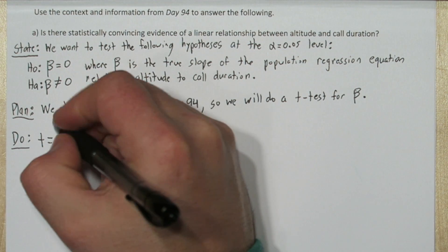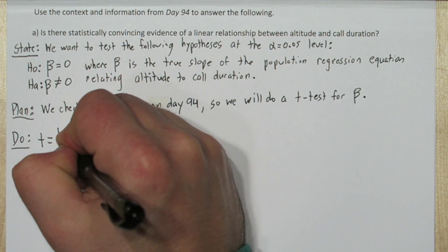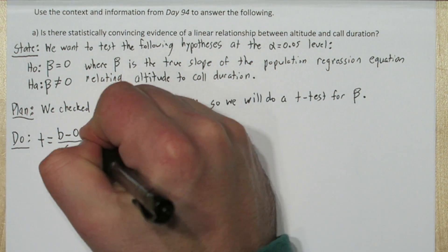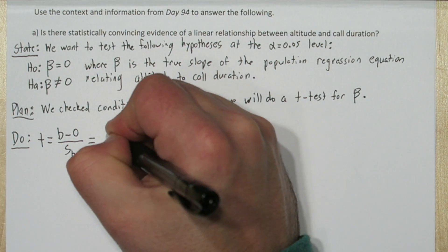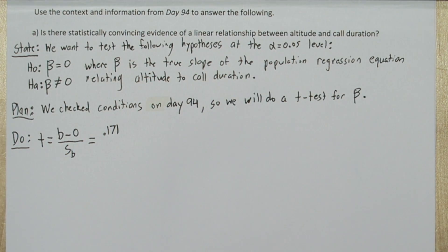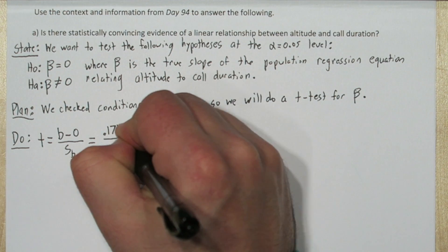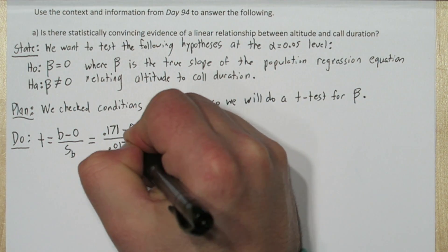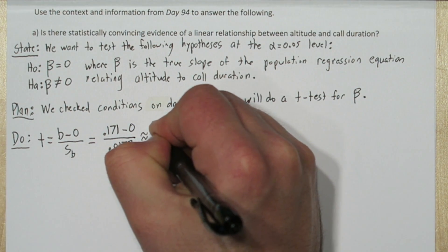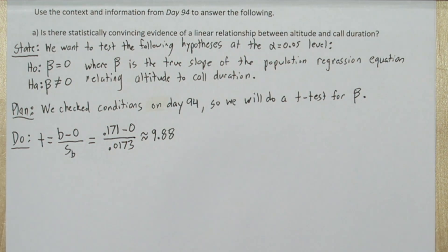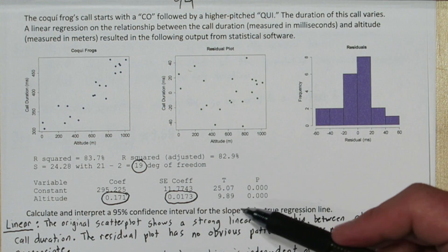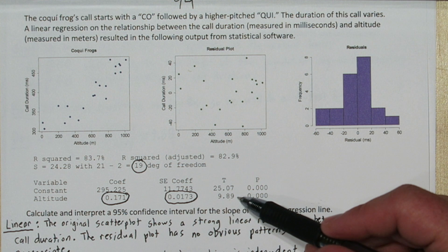t equals our sample slope minus zero divided by the standard error of our sample slope. So from the output, our sample slope was 0.171. And we'll subtract zero from it and divide it by our standard error. That gives us about 0.988. And if we check the computer output, they got 9.89.